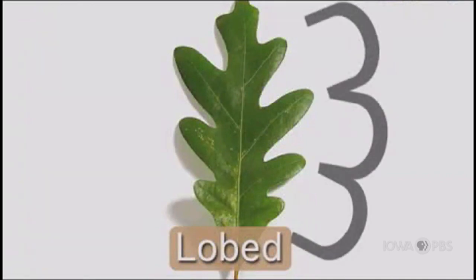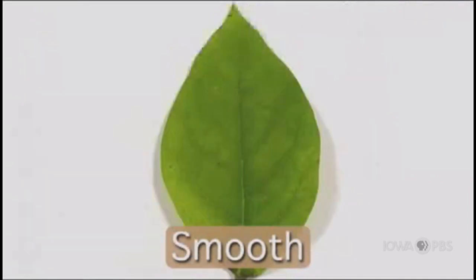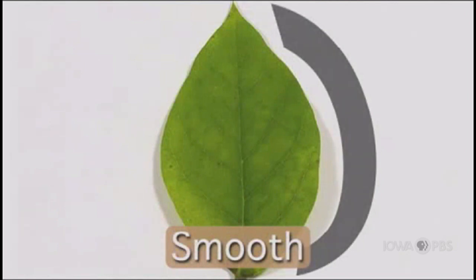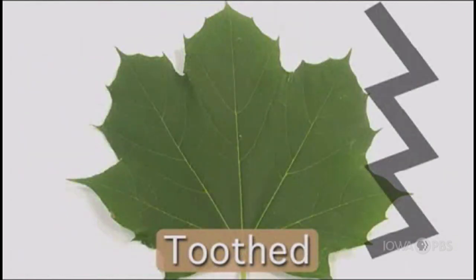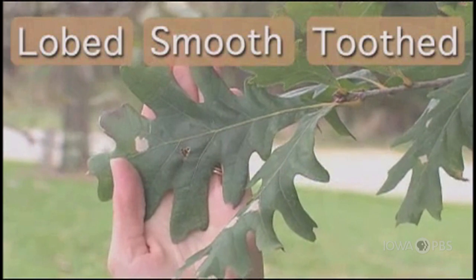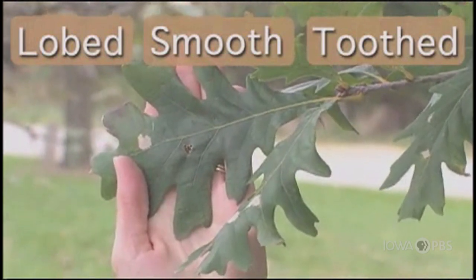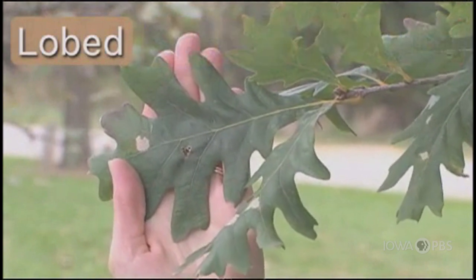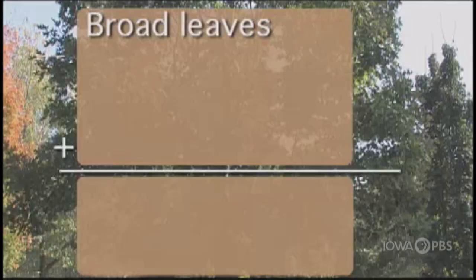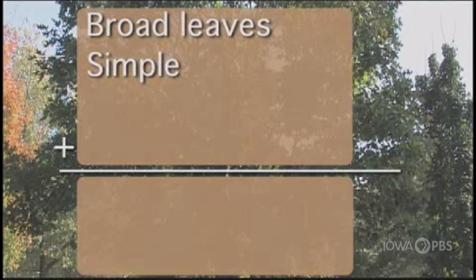The next question in the key refers to the leaf margin — the edge of the leaf. This is an example of a lobed leaf. This is an example of a smooth leaf. This is an example of a toothed leaf. So take a look at our tree. Is this leaf lobed, smooth, or toothed? It is lobed. So that's the last question. Our findings show that these are broad leaves, simple, alternate on the branch, and lobed. According to the key, this is a white oak, and the scientific name is Quercus alba.